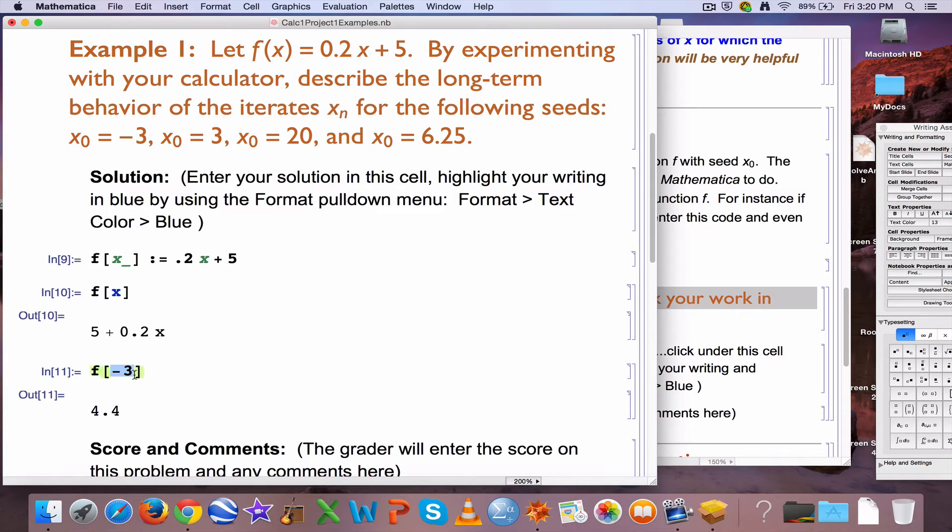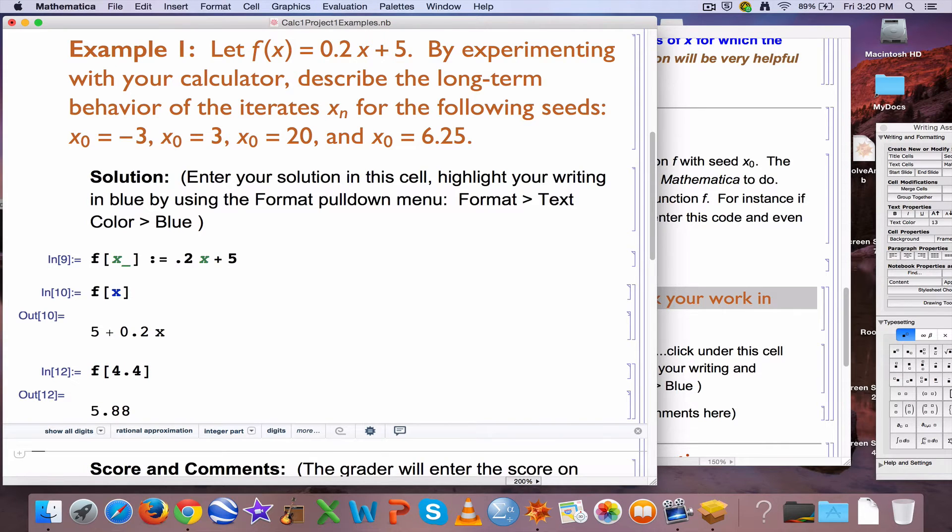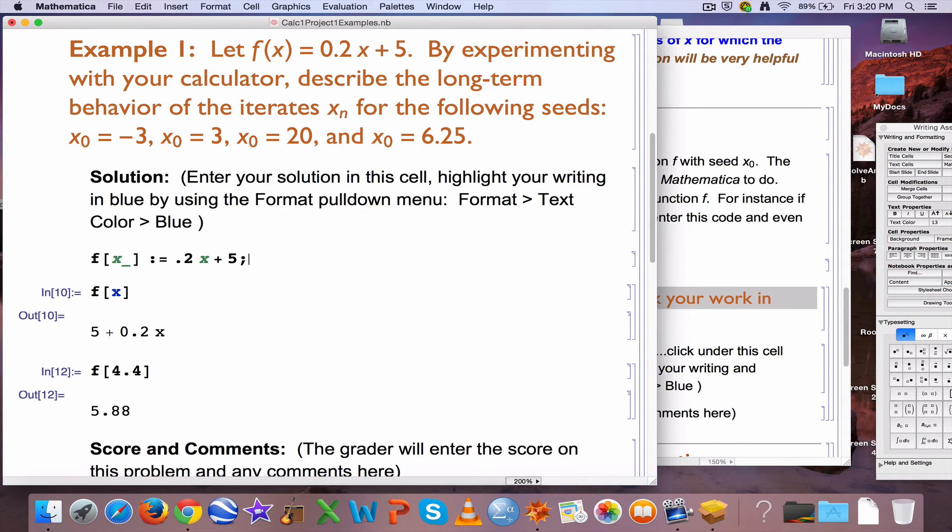The idea of iteration, again, is now you take that output and make it a new input. So the next iterator would be 5.88, so in that case x0 would be negative 3, x1 would be 4.4, x2 would be 5.88.